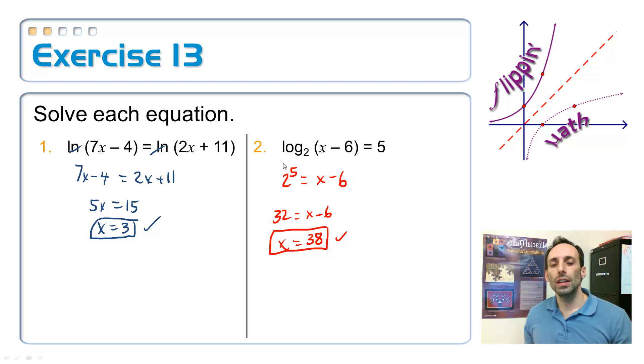Okay, so I could either on number 2 exponentiate with 2 being the base, or I could rewrite it in exponential form. It turns out that I'll get the exact same answer. So 2 is the base raised to the fifth power is equal to x minus 6. Another linear equation, solve it, you get 38. 38 does not make that negative, so we're okay.